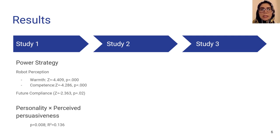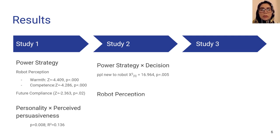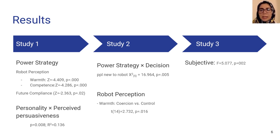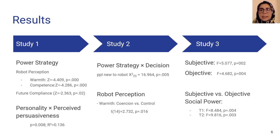The second study showed that social power could be used to make people select a less desirable choice. And finally, the last study showed that this effect does not decay over repeated interaction.